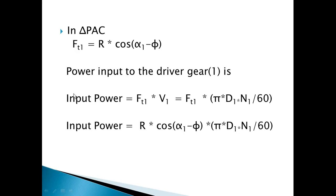Power input is nothing but tangential force into the pitch line velocity. So input power equals FT1 into V1, where V1 is the pitch line velocity equal to πd1n1/60. Replacing FT1 with R·cos(α1 − φ), the input power equals R·cos(α1 − φ) into πd1n1/60.